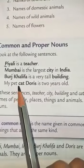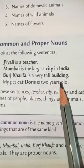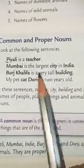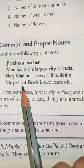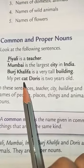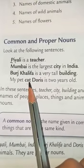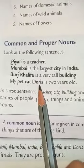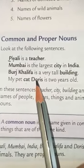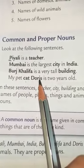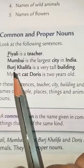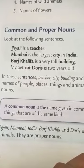My pet cat Doris is two years old. Here, 'cat' can refer to any cat in the world - we are not talking about one specific cat, so 'cat' is a common noun. But 'Doris' is a name written with a capital D, so it is a proper noun. I hope you have understood the difference between common noun and proper noun.